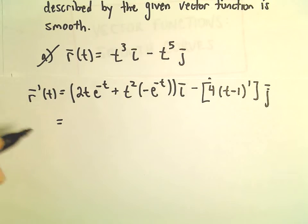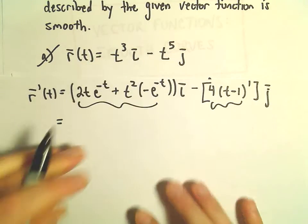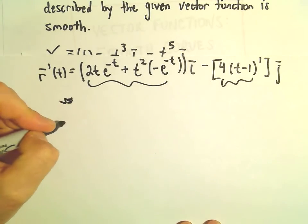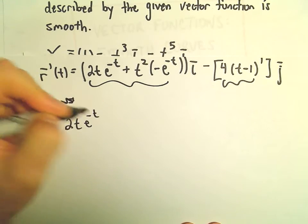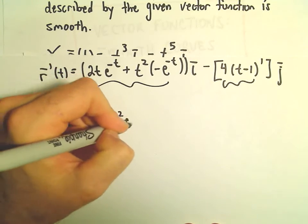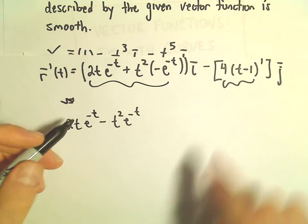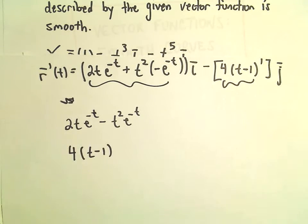Now what we do is we basically just look at each component. So I'm going to simplify this a little bit. So this is 2t times e to the negative t minus t squared times e to the negative t. And then we look at the other component as well, 4 times t minus 1.